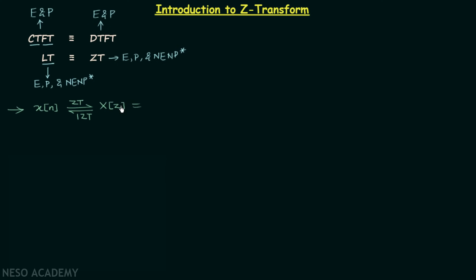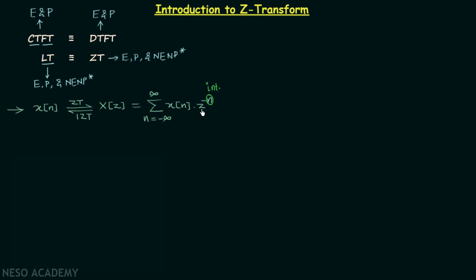To calculate X(Z) we perform the summation from n equal to minus infinity to plus infinity of the discrete time signal multiplied by Z to the power minus n. Here n is an integer and Z is a complex variable.